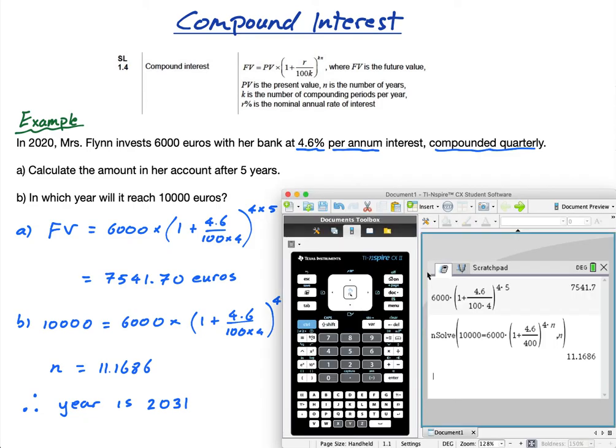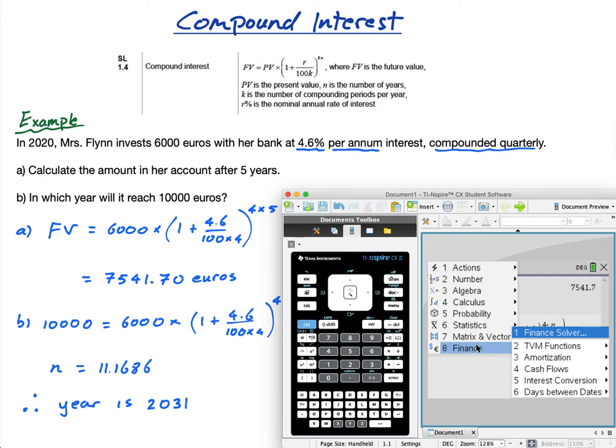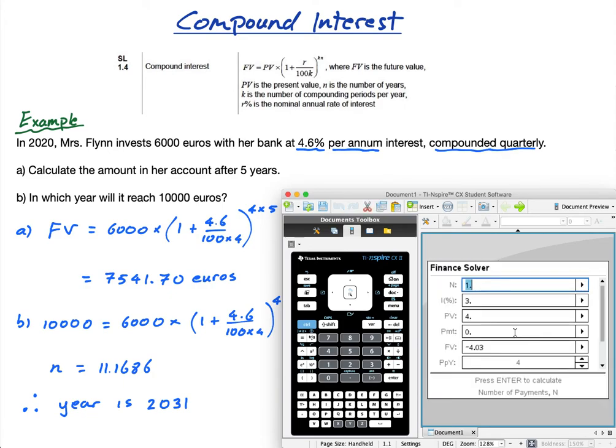Now if I go to Finance here, Finance Solver, I have this. Now this looks a bit scary but it makes your life quite easy. So for compound interest, it says down here what's going on. n is the number of payments.